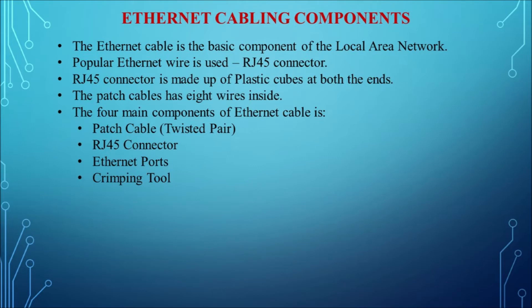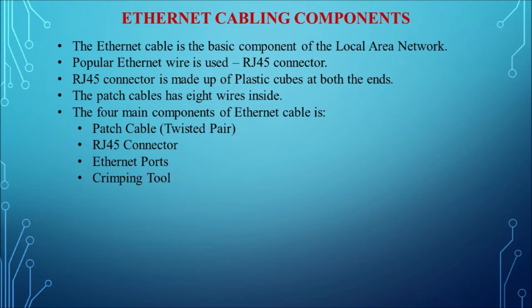Switches and routers may be used to increase the number of interconnected systems. The Ethernet cable is a basic component of the LAN. The most popular Ethernet wire is the RJ45 Ethernet cable — the Registered Jack version 45. The components of the Ethernet cable are the RJ45 connector, the patch cable (UTP), and the plastic covering. The RJ45 connector is made of a plastic cube connected at both ends; one end connects to the computer and the other to the LAN port.